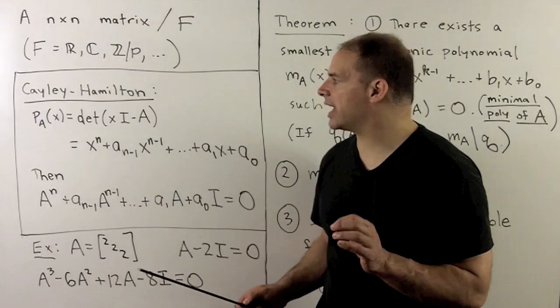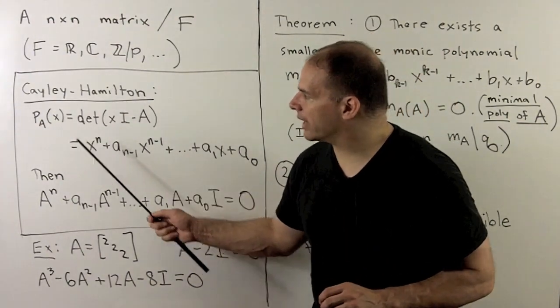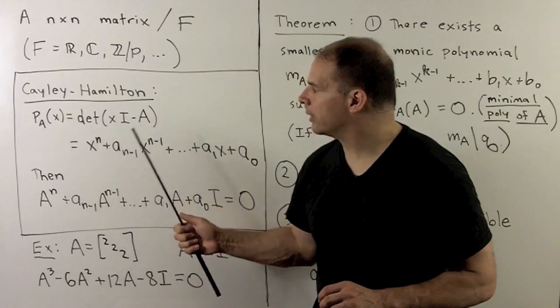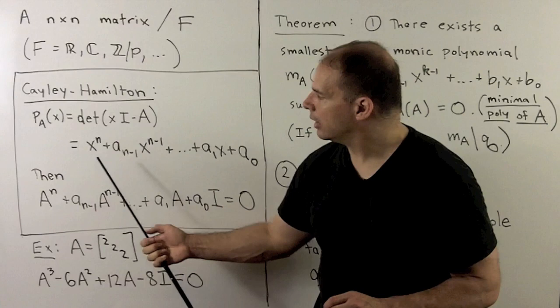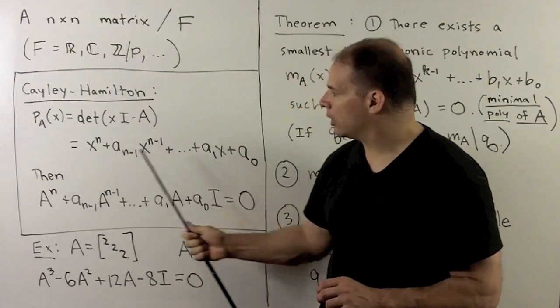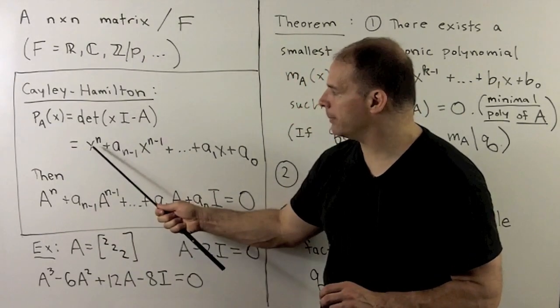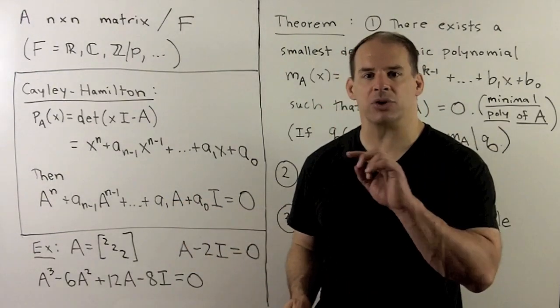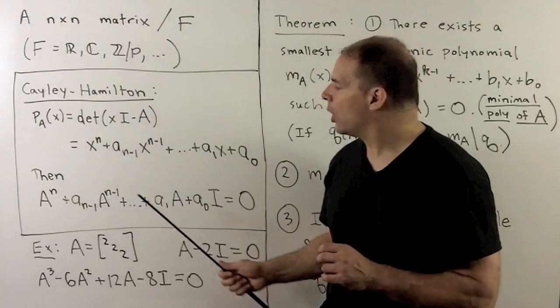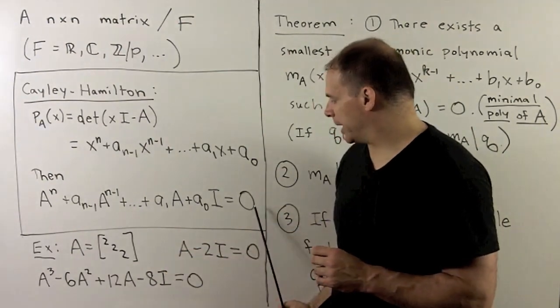The Cayley-Hamilton Theorem says if we form the characteristic polynomial for A, given by determinant of X*I minus A, we have a polynomial with coefficients with leading term of one. Then, if we convert this over to a matrix polynomial in A, what comes out is the zero matrix.